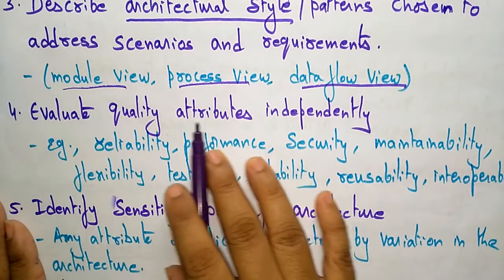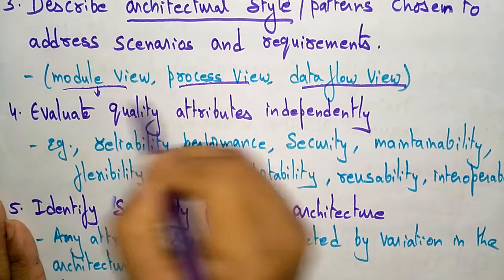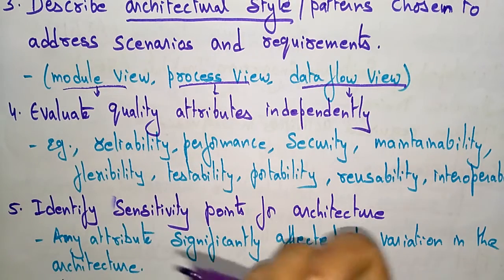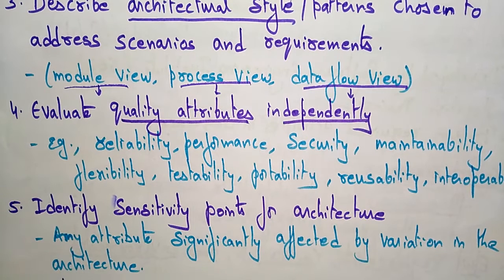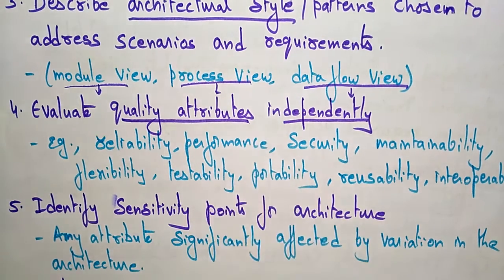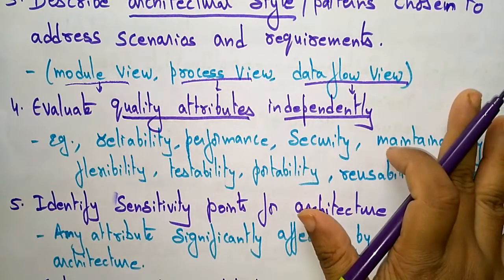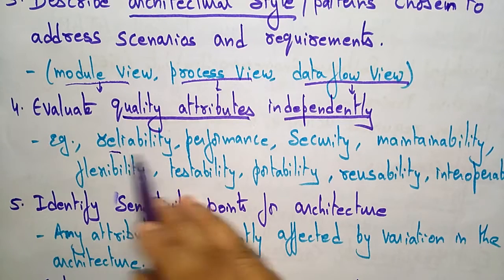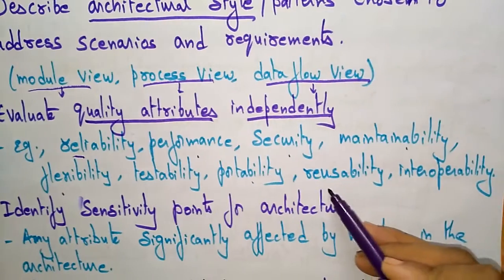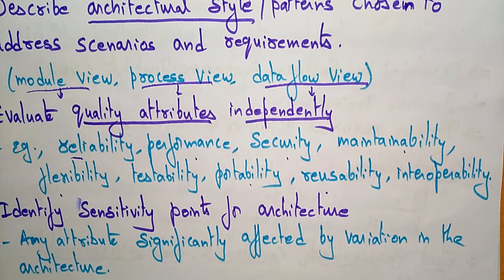After collecting use cases, requirements, and architectural styles, the next step is to evaluate the quality attributes independently. In each view — module view, process view, and data flow view — there is no direct connectivity between them; modules act independently and are integrated later. The quality attributes we need to check in each view include reliability, performance, security, maintainability, flexibility, testability, portability, reusability, and interoperability.